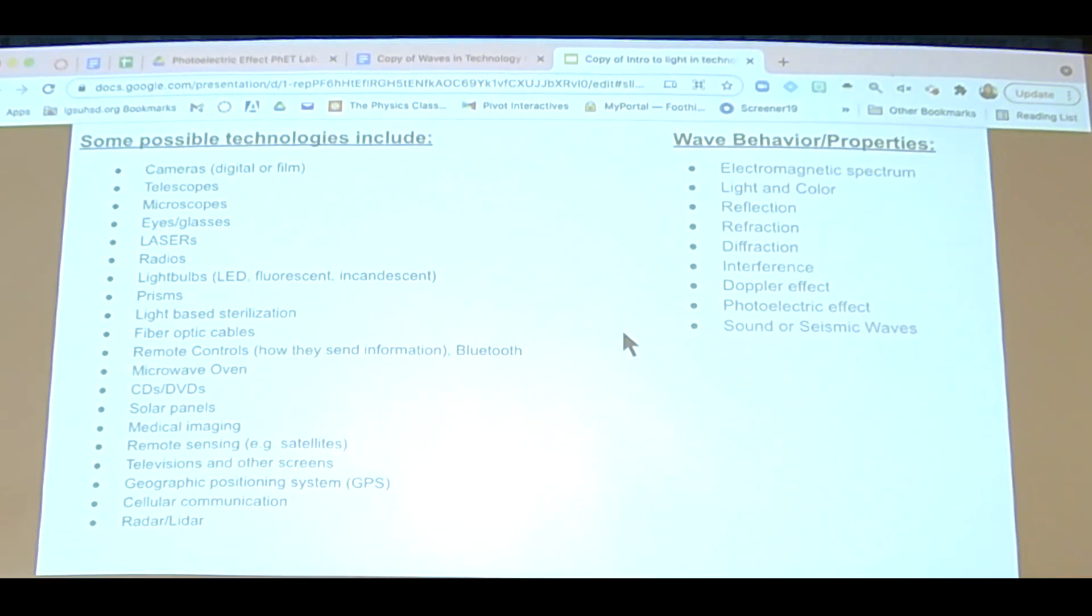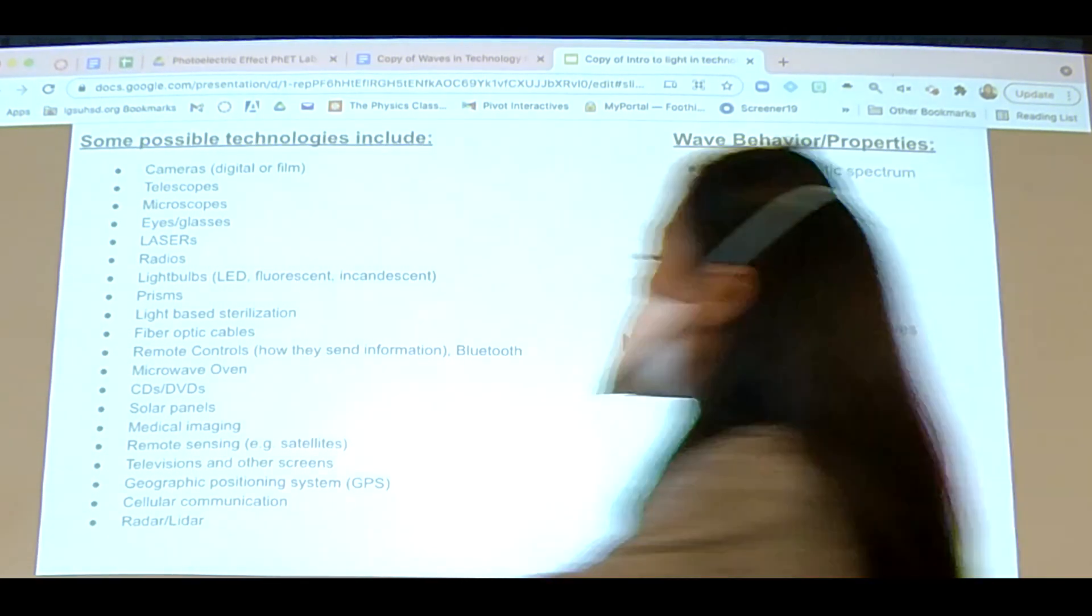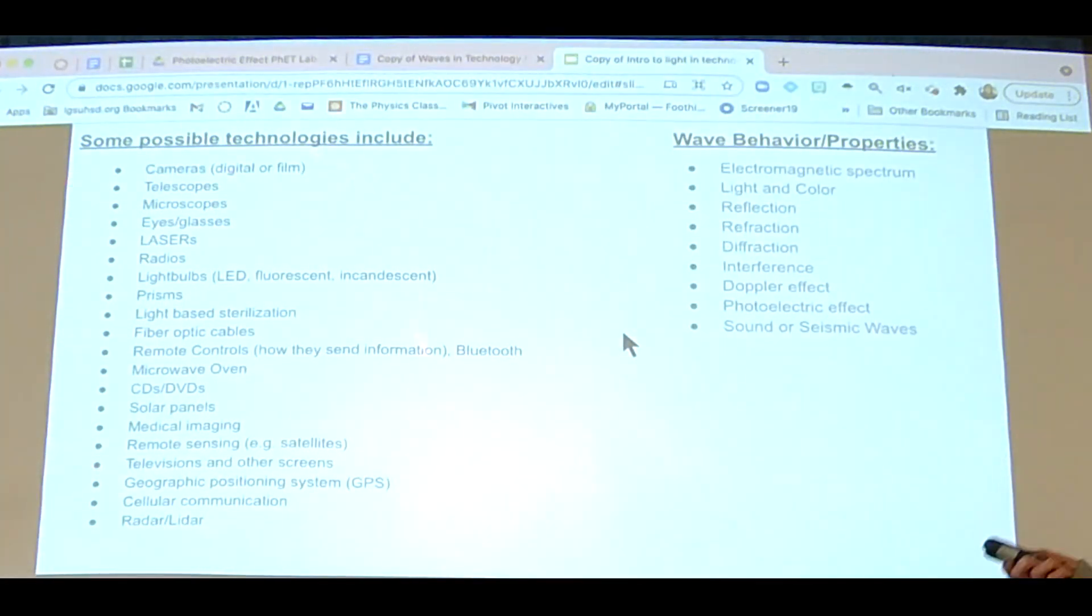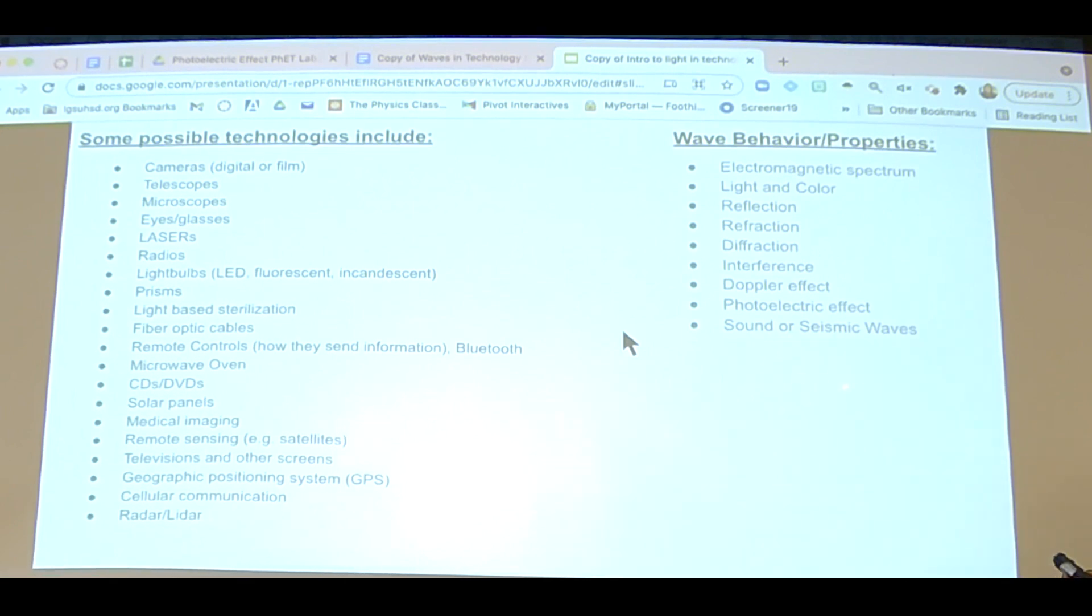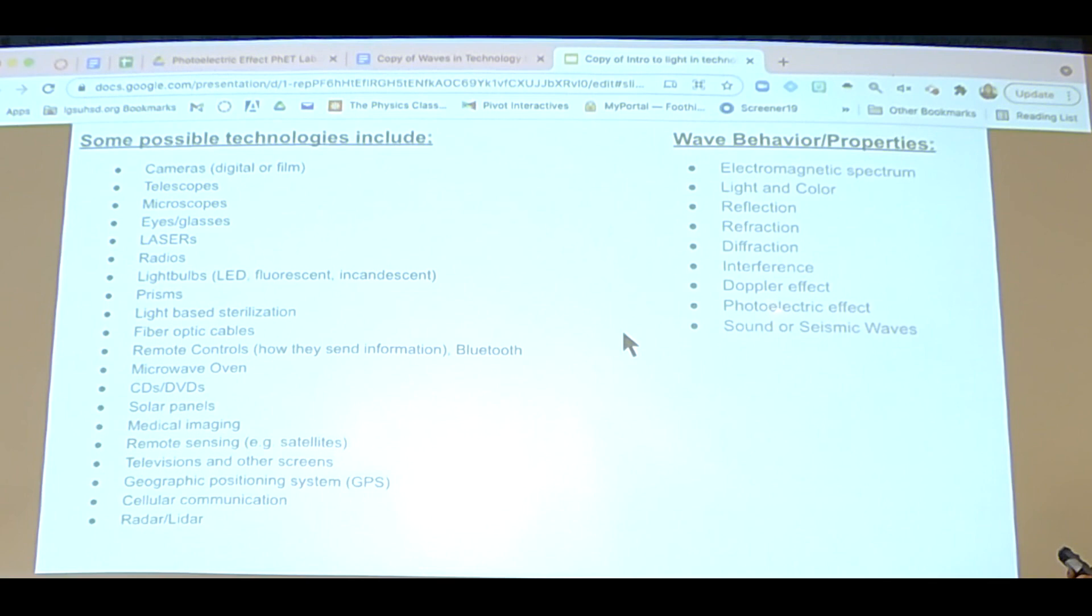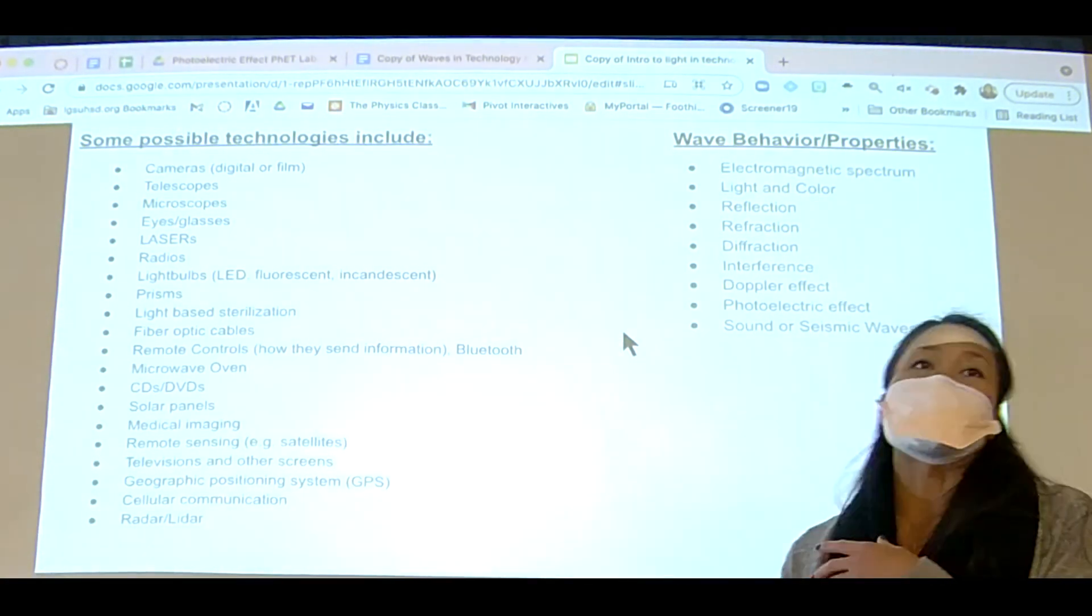I've got a list, and you have access to all of this, a list of all the different technologies we could think of and technologies that students have done in the past. You can see there's CDs here, medical imaging, satellites, radar, lasers, and then we've got all the different wave properties and behaviors. Actually, I just realized we don't even have resonance on here, so I have to put that in there. But these are the properties that I'm going to be looking for. Obviously, not all of them. You don't have a technology that has every single one, but I do want to see that you are talking about physics in your presentation on a light wave technology.